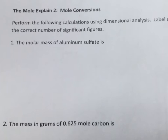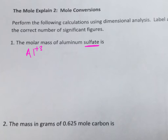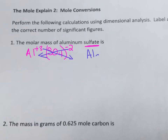For the warm-up, the first question asked for the molar mass of aluminum sulfate. Before dealing with any numbers, you had to write the chemical formula. Aluminum has a +3 charge, and sulfate is a polyatomic ion — SO₄ with a -2 charge. Taking that 2 across and the 3 across, you end up with Al₂(SO₄)₃.